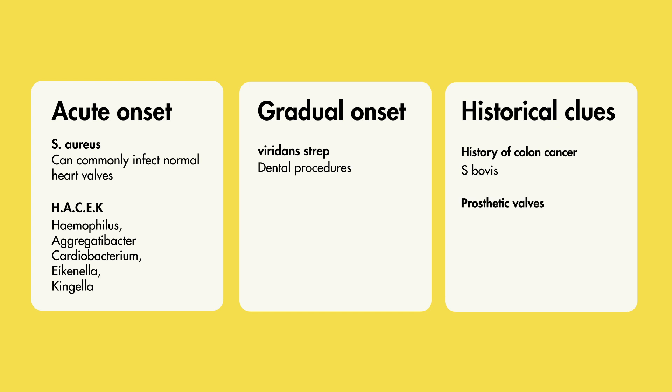In patients with prosthetic heart valves, think Staph epidermidis. Because part of the diagnosis requires culturing these bugs, obtaining multiple blood cultures plays an important role. In cases where you still suspect endocarditis but cultures are unrevealing or negative, you should start thinking about Coxiella and Bartonella species.